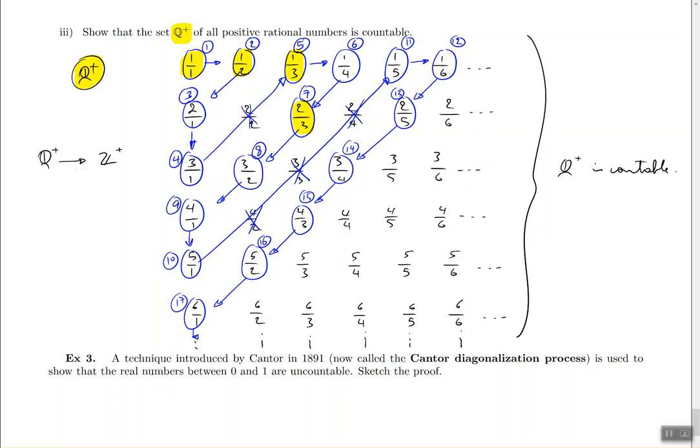This isn't exactly a full formal proof — I'm not giving you the name of the function f(x) or specifying exactly how it performs the count. I'm just describing the counting recipe. If you want to go further, you could extend the table and keep going. But that's the gist of it.